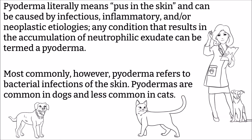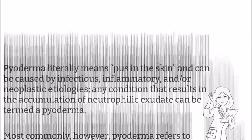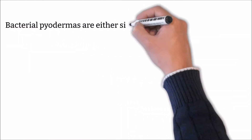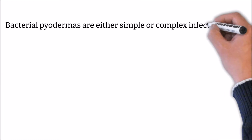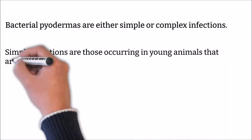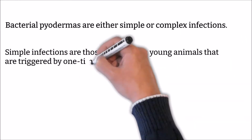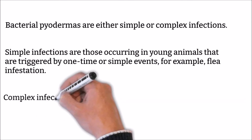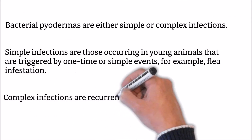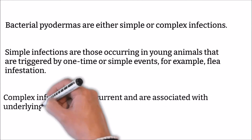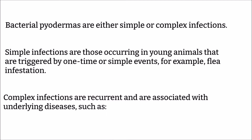Pyodermas are common in dogs and less common in cats. Bacterial pyodermas are either simple or complex infections. Simple infections are those occurring in young animals that are triggered by one-time or simple events — for example, flea infestation. Complex infections are recurrent and are associated with underlying diseases.